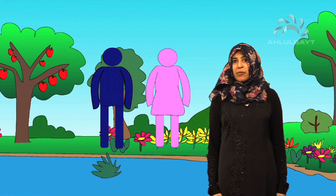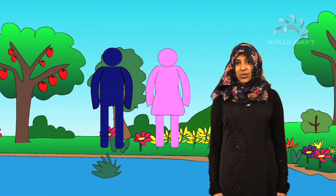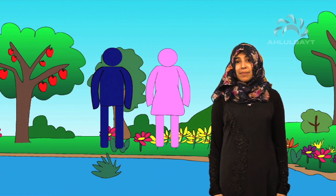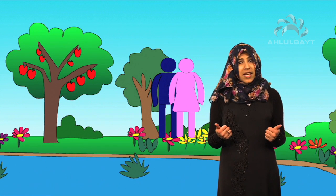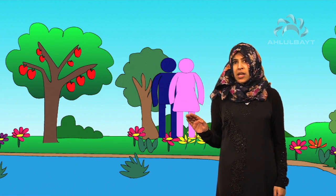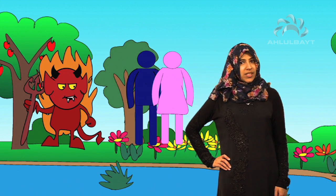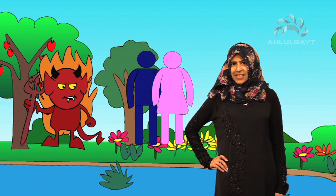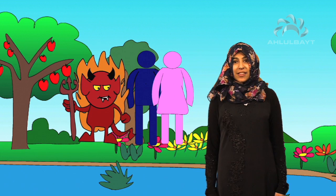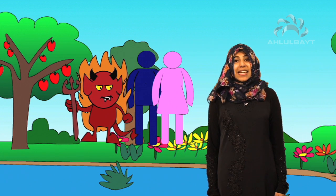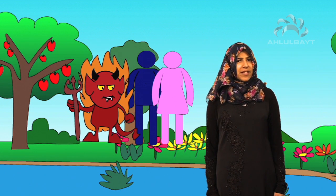There was however one thing that they weren't allowed to do there and this was to eat the fruit of a special tree. Adam and Hawa were very good at first. They stayed away from the tree but Shaitan was very naughty and he told them that they were silly to stay away from the tree. He said nothing would happen to them if they ate the fruit and that it was delicious they should definitely try it.